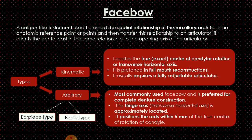Orientation jaw relation is recorded with the help of a face bow. A face bow is a caliper-like instrument used to record the spatial relationship of the maxillary arch to some anatomic reference point or points, and then transfer this relationship to an articulator. It orients the dental cast in the same relationship to the opening axis of the articulator. The term 'caliper-like instrument' is very important when writing the definition of face bow.